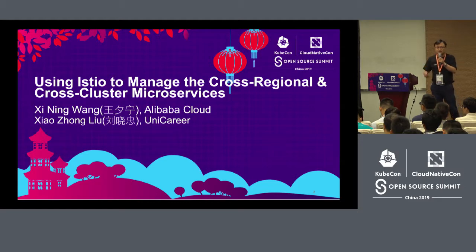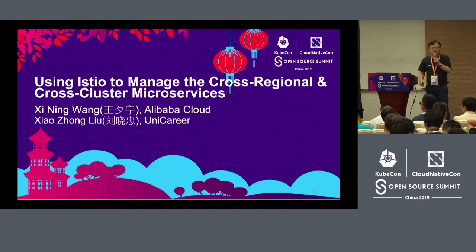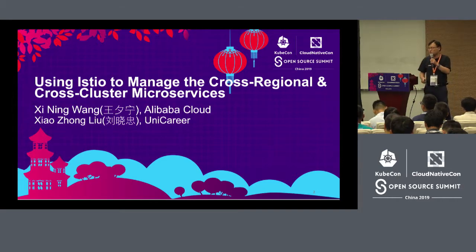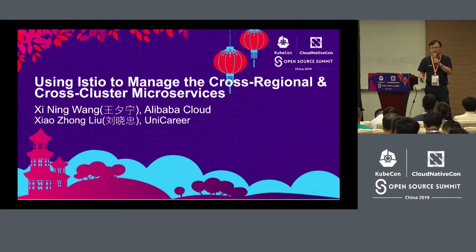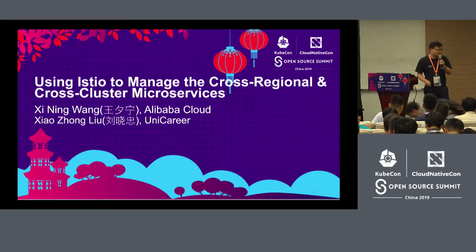There are two parts to this presentation. First, I'll tell you how we use Istio to manage services on Alibaba Cloud and what the current progress is in this area. The second part will be done by Liu Xiaojong, covering how Istio is used in practice on Alibaba Cloud, and eventually we'll have a demo to see how it's implemented.